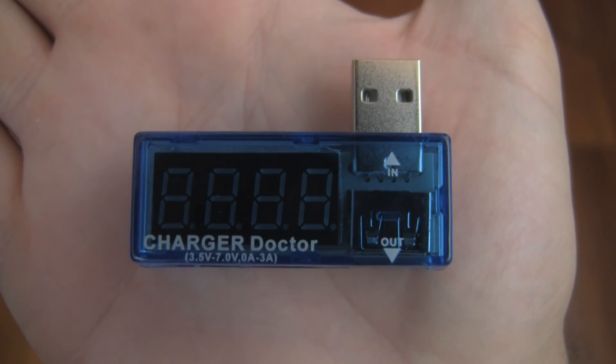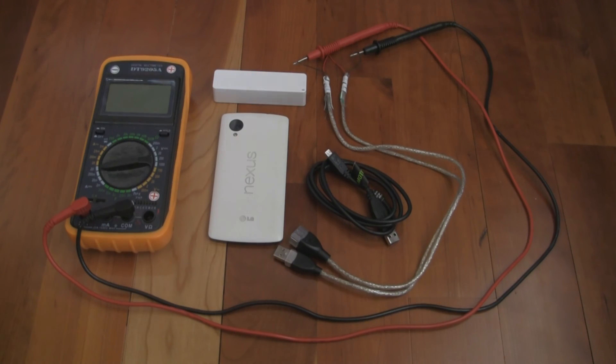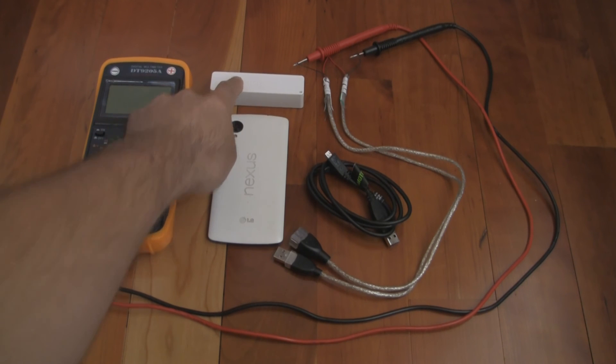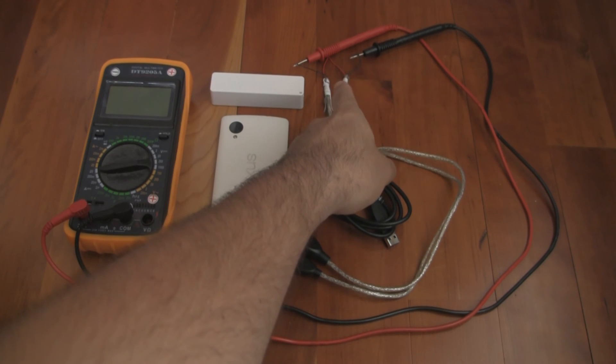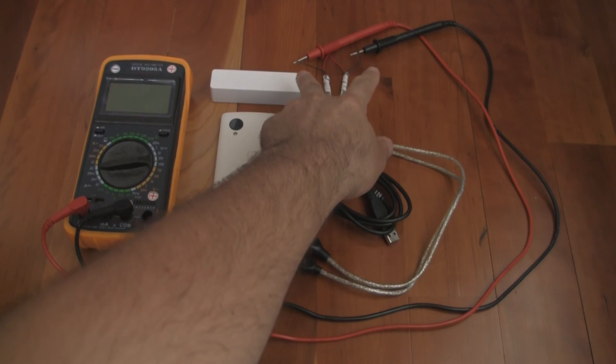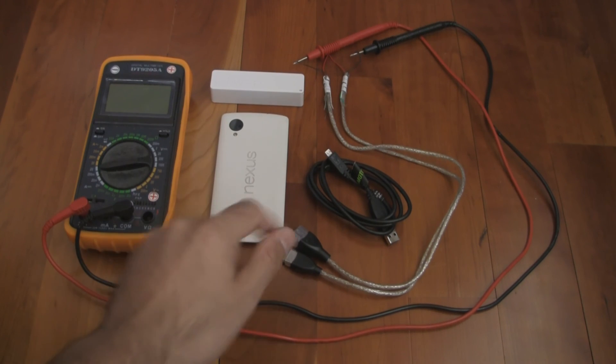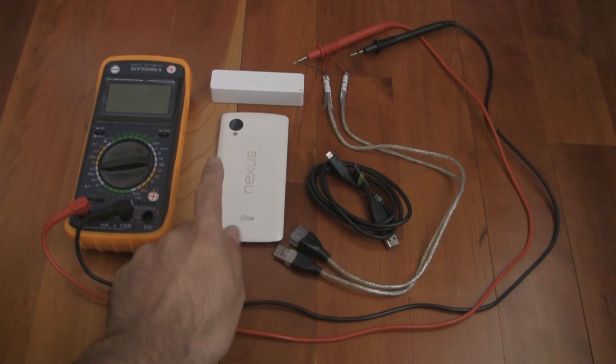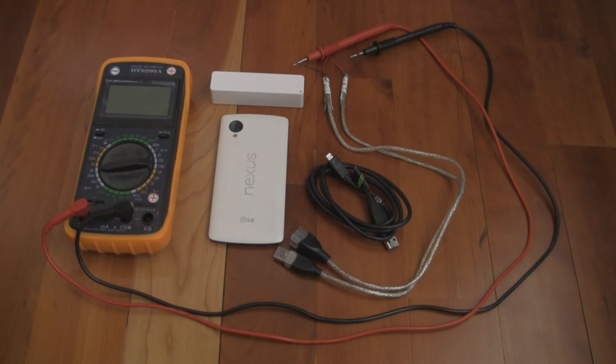So what I'm going to do to test it is show you how much the Charger Doctor shows and how a traditional multimeter will show you amperage. In this I've got a source which is the power bank, and it's going to go through this USB cord which I've cut in half and connected the positive wires together and separated the negative wires which will run through the multimeter and tell me the amperage readings. And it's going to go through a micro USB cord into the load which is a cell phone. So let me set this up and we'll see how it works.